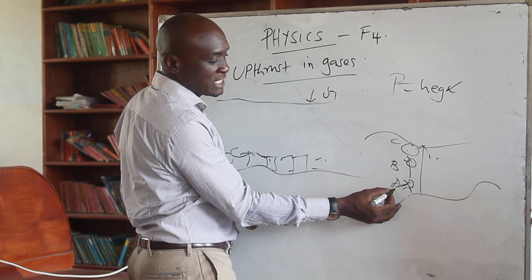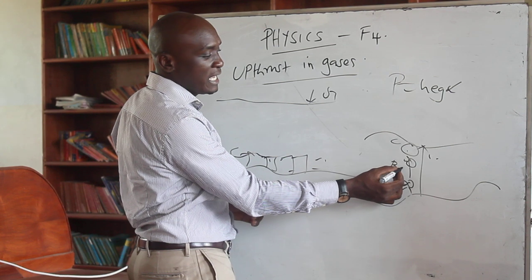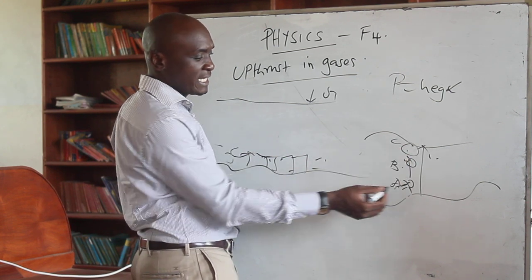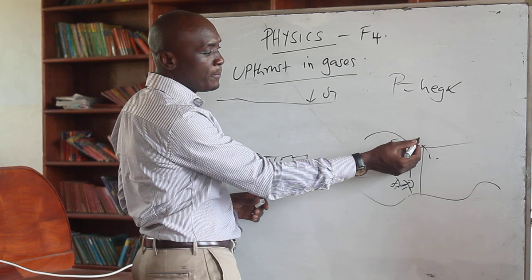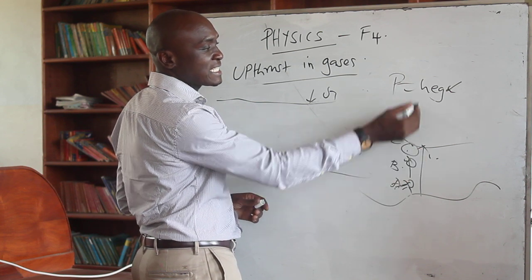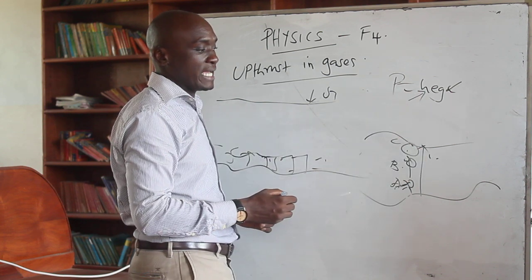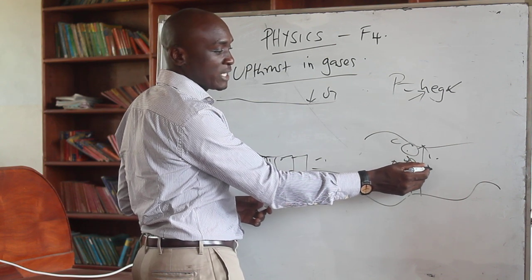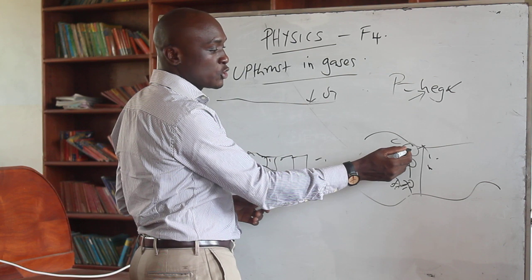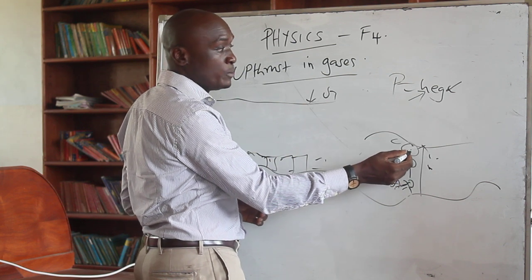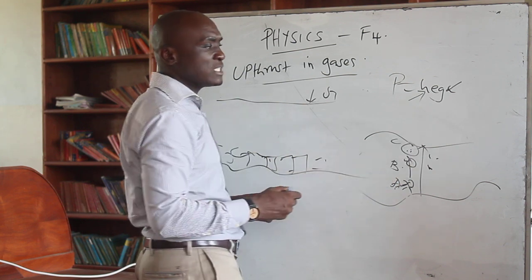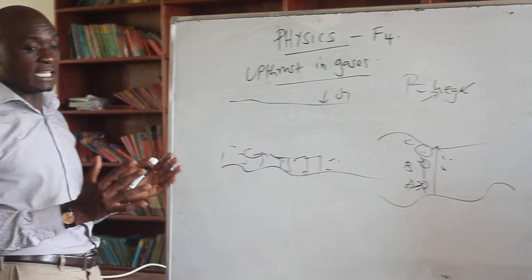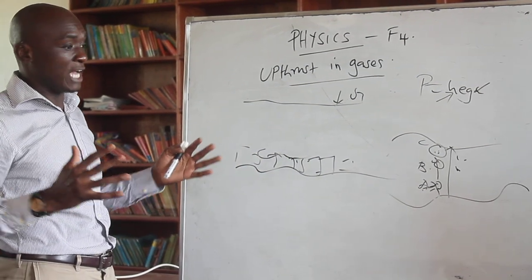Consider three points: point A at the bottom, point B at the middle, and point C near the surface of the swimming pool. The volume of the gas bubble at point A compared with B is very small. At point C, because the pressure is reducing as we move up, and since the density of the water is constant, the pressure is also reducing, and the volume is increasing. The pressure being exerted on the bubble is decreasing, which is why the volume actually increases.